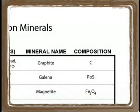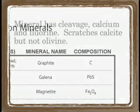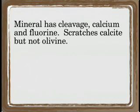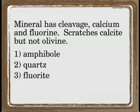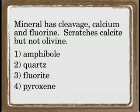Each common mineral has its composition given. Here's an example of a Regents exam question involving the mineral diagram in your reference tables: Name the mineral that has cleavage, contains calcium and fluorine, and can scratch calcite but not olivine. The choices are: 1. Amphibole, 2. Quartz, 3. Fluorite, or 4. Pyroxene.